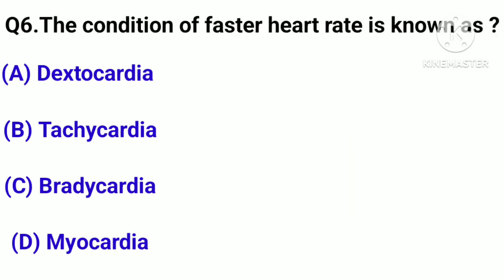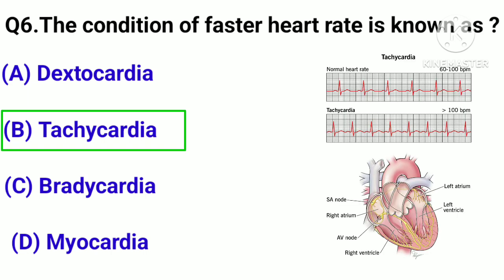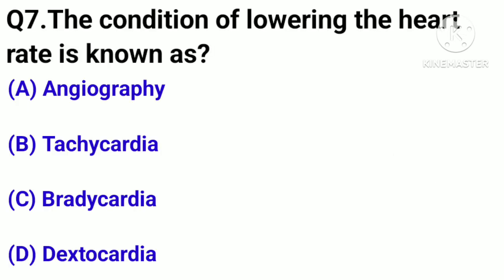Question number 6. The condition of faster heart rate is known as? Option A: Dextrocardia. Option B: Tachycardia. Option C: Bradycardia. Option D: Myocardia. Correct answer: Option B, Tachycardia.